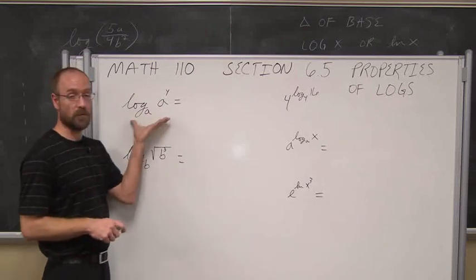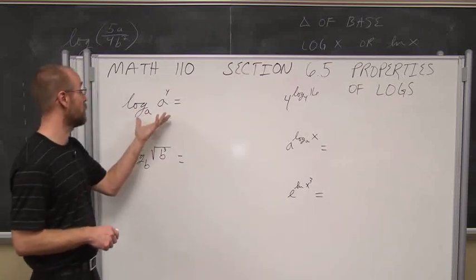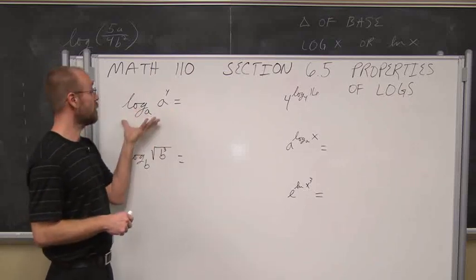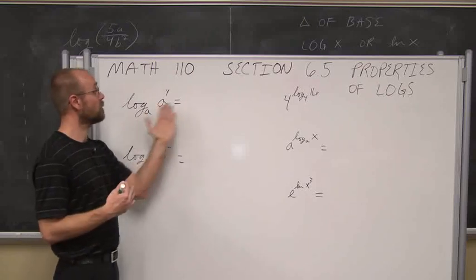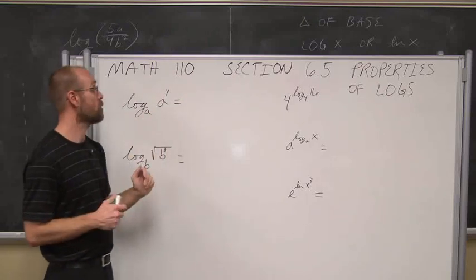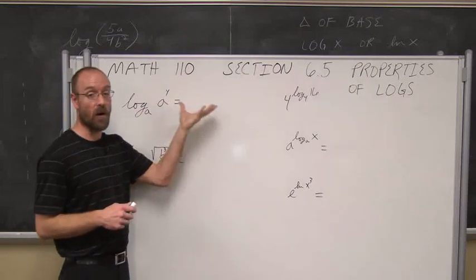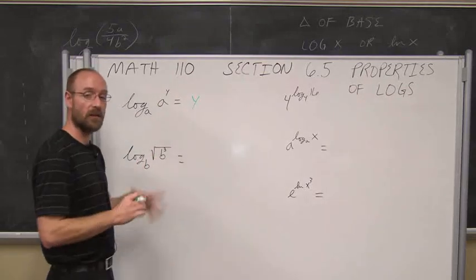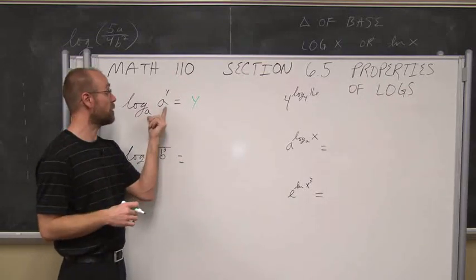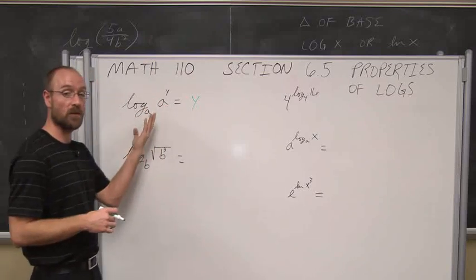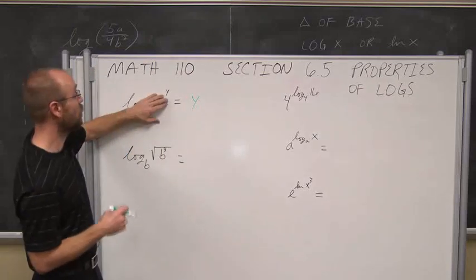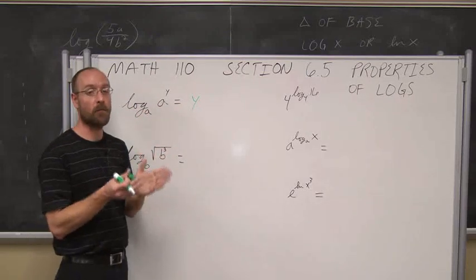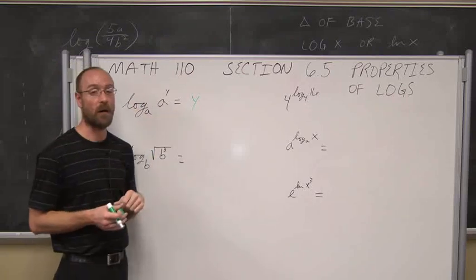If we look at log base A of A, a logarithm asks us: A to what power is A to the Y? Well, since logarithms are exponential values, A to the Y is A to the Y. If the bases are the same, it reduces to 1. A to the first is A, so Y equals Y. Logarithms tell us what a power is.